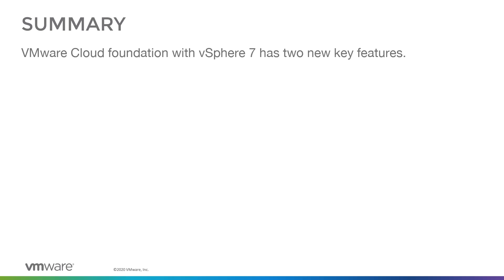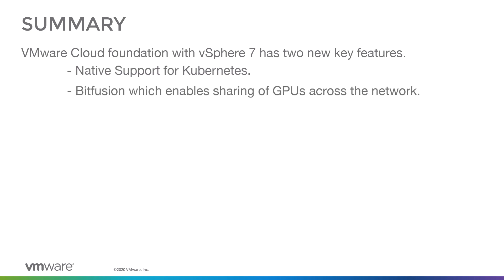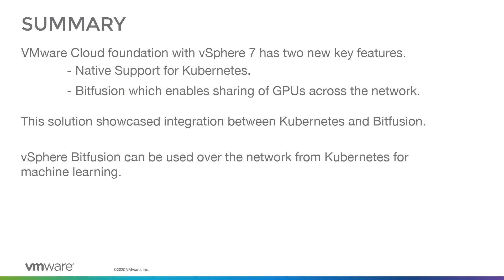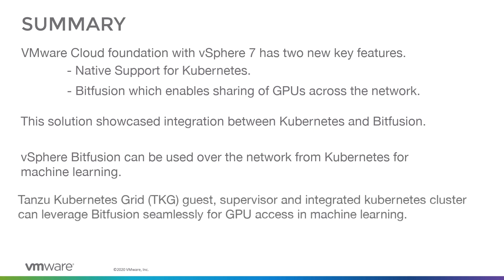In summary, VMware Cloud Foundation with vSphere 7 has two key new features: native support for Kubernetes, and Bitfusion which enables sharing of GPUs across the network. This solution showcased integration between Kubernetes and Bitfusion. vSphere Bitfusion can be used over the network from Kubernetes for machine learning. TKG guest, supervisor, and integrated Kubernetes clusters can leverage Bitfusion seamlessly for GPU access in machine learning. Thank you.